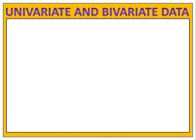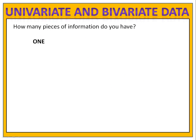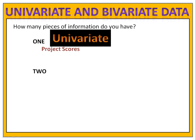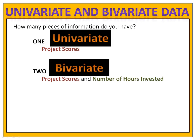We can also categorize data by how many pieces of information you have — one or two. An example includes project scores: if you only have that one piece of data, we call it univariate. We only collected one kind of information — the scores people received on a project. If you have two pieces of information, for example the project scores and the number of hours spent on the project, you have bivariate data.